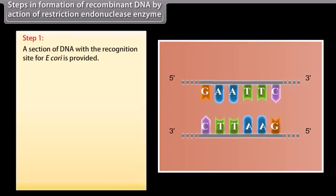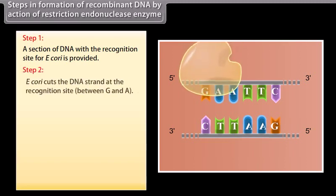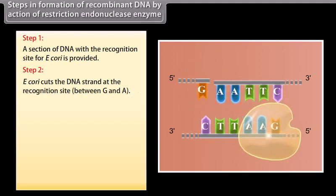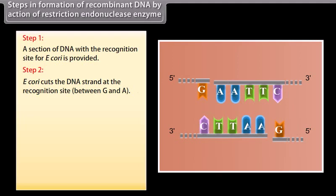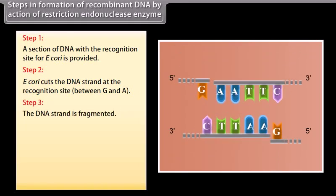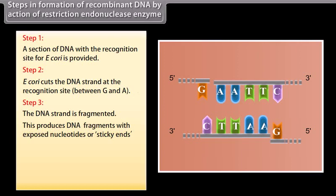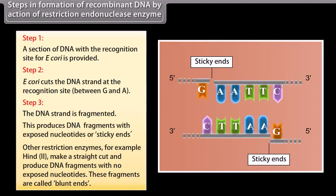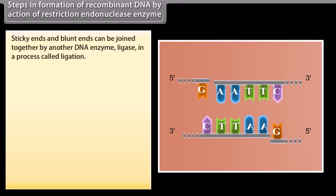Step 1: A section of DNA with a recognition site for EcoRI is provided. Step 2: EcoRI cuts the DNA strand at the recognition site between G and A. Step 3: The DNA strand is fragmented. This produces DNA fragments with exposed nucleotides or sticky ends. Other restriction enzymes, for example HindII, make a straight cut and produce DNA fragments with no exposed nucleotides — these fragments are called blunt ends. Sticky ends and blunt ends can be joined together by another DNA enzyme, ligase, in a process called ligation.